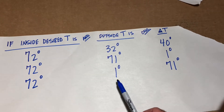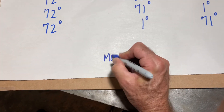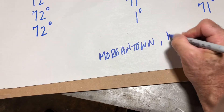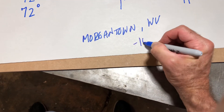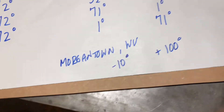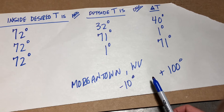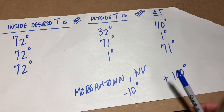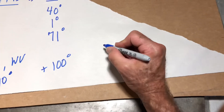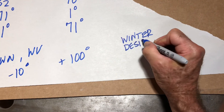Now, with all these different temperatures, which one do we use? So let's say Morgantown, West Virginia, where this course is being taught, has a lot of temperature variation. In the winter we might be down to minus 10 degrees, in the summer we might be plus 100 degrees. So what is our delta T? Well, it depends on what time of year we're thinking. And since we're going to be looking at heating, we're going to assume a cold season, and we're going to use a thing called the winter design temperature.